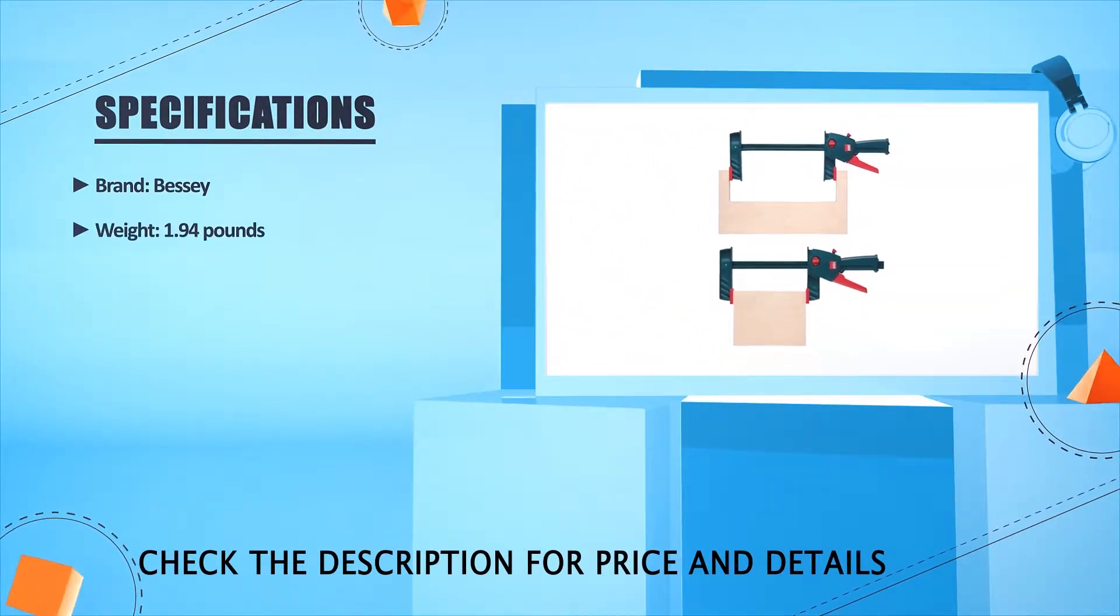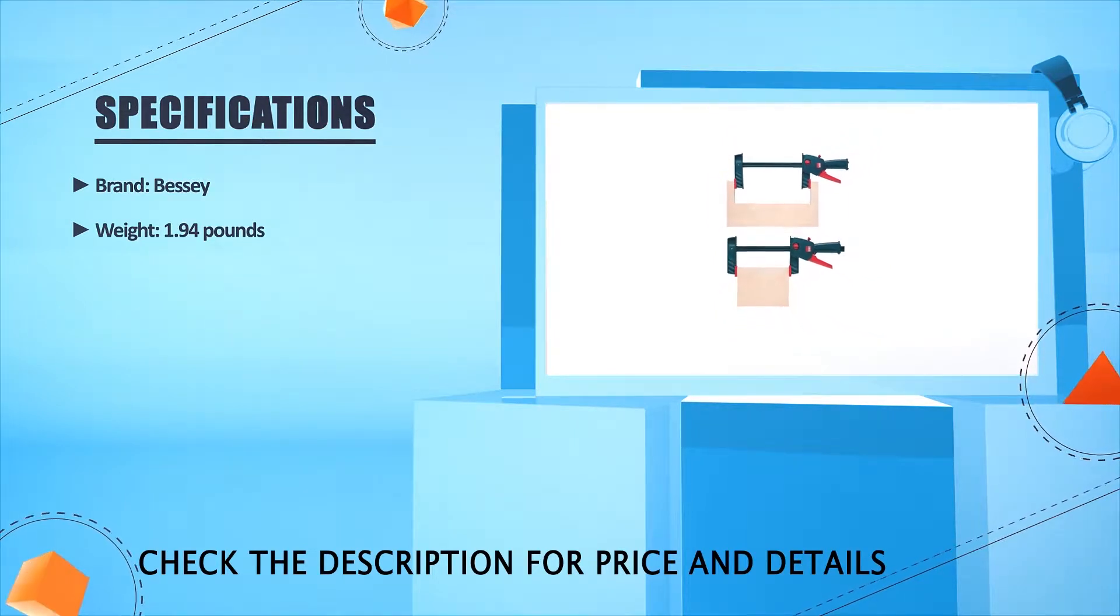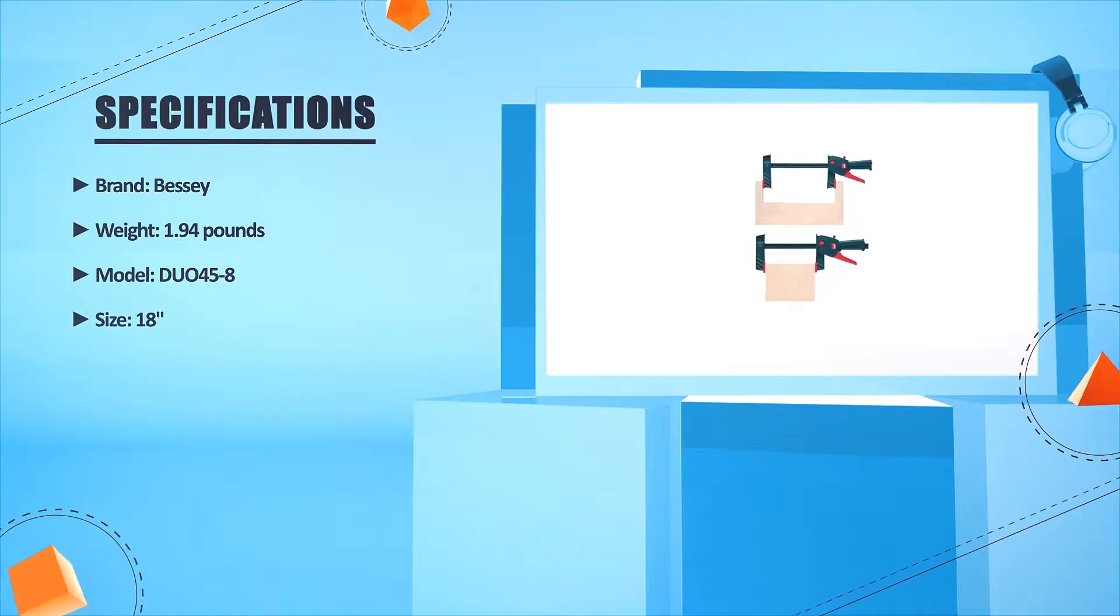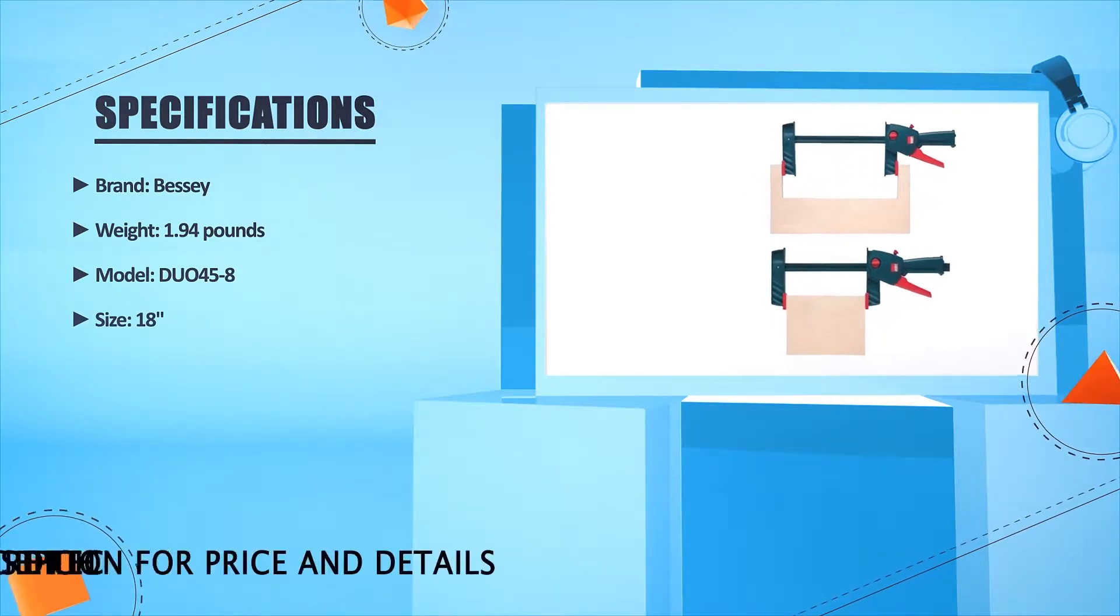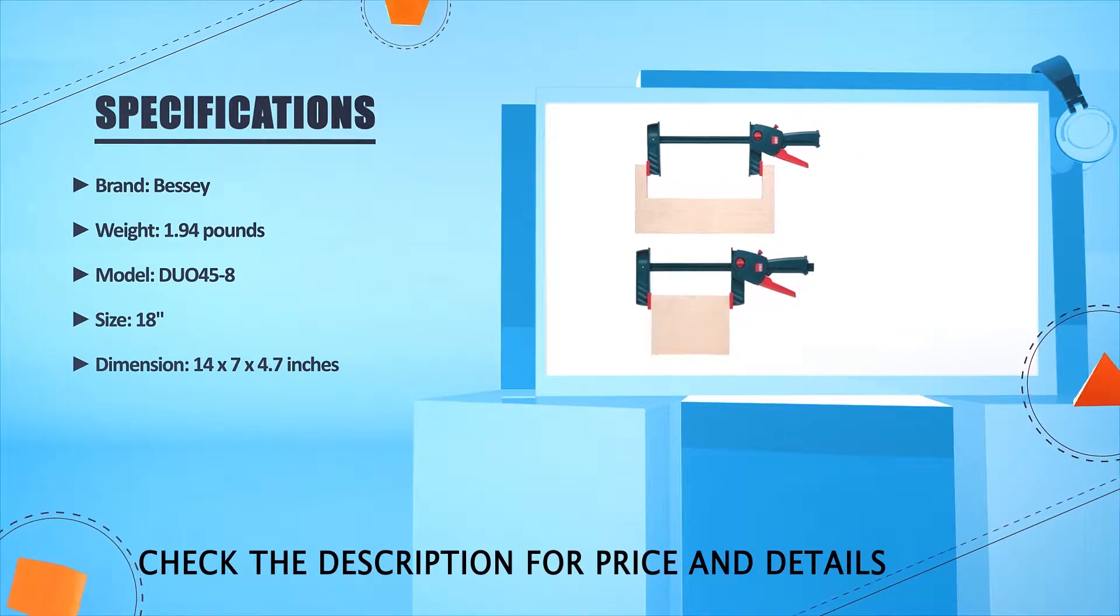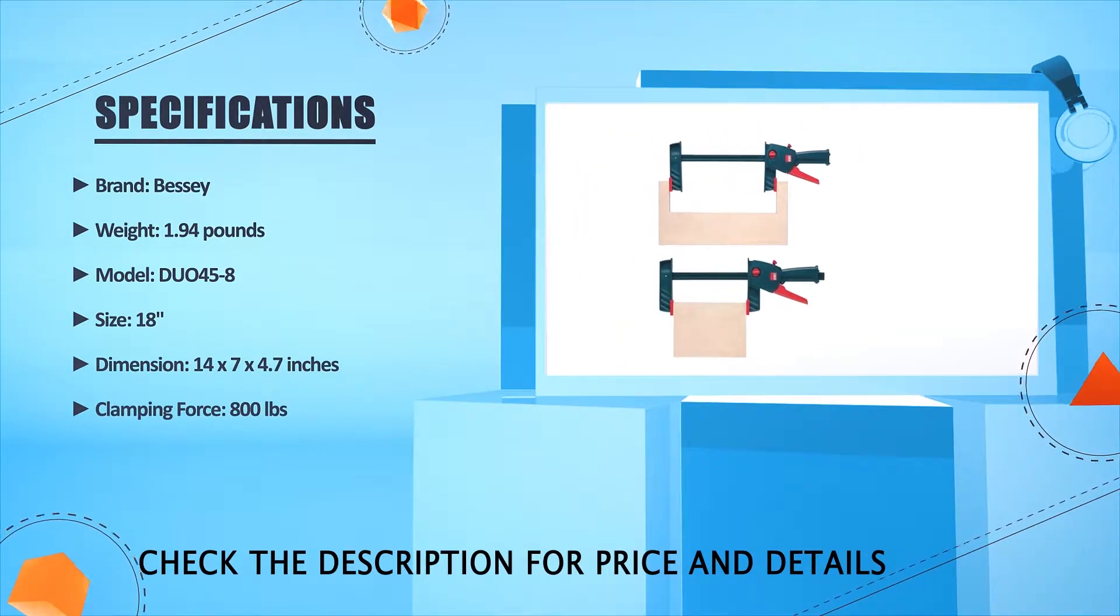Brand: Bessie. Weight: 1.94 pounds. Model: DU-04 5/8. Size: 18 inches. Dimension: 14 x 27 x 24.7 inches. Clamping force: 800 pounds.